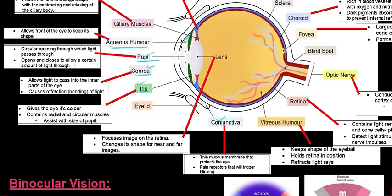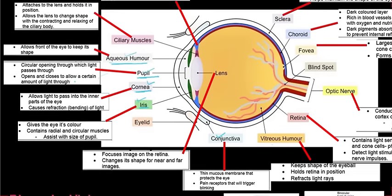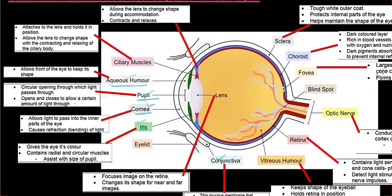The next one is the aqueous humor, which is the area in front of the pupil and iris and also behind it between the iris and the lens. It is a jelly-like substance that allows the front of the eye to keep its shape — maintaining the round shape of the eye. The vitreous humor has a similar function, which we'll get to shortly.